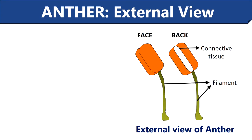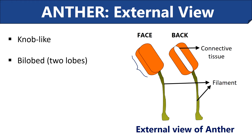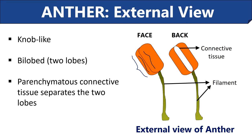Do you remember how the anther actually looks? It's easy to remember the morphological characteristics of the anther — just have a look at this picture. You can see a knob-like structure which is the anther. There are two lobes or chambers, and the majority of flowers have a bilobed anther. These two lobes are connected by parenchymatous connective tissue. The anther is also attached to a long and slender filament.